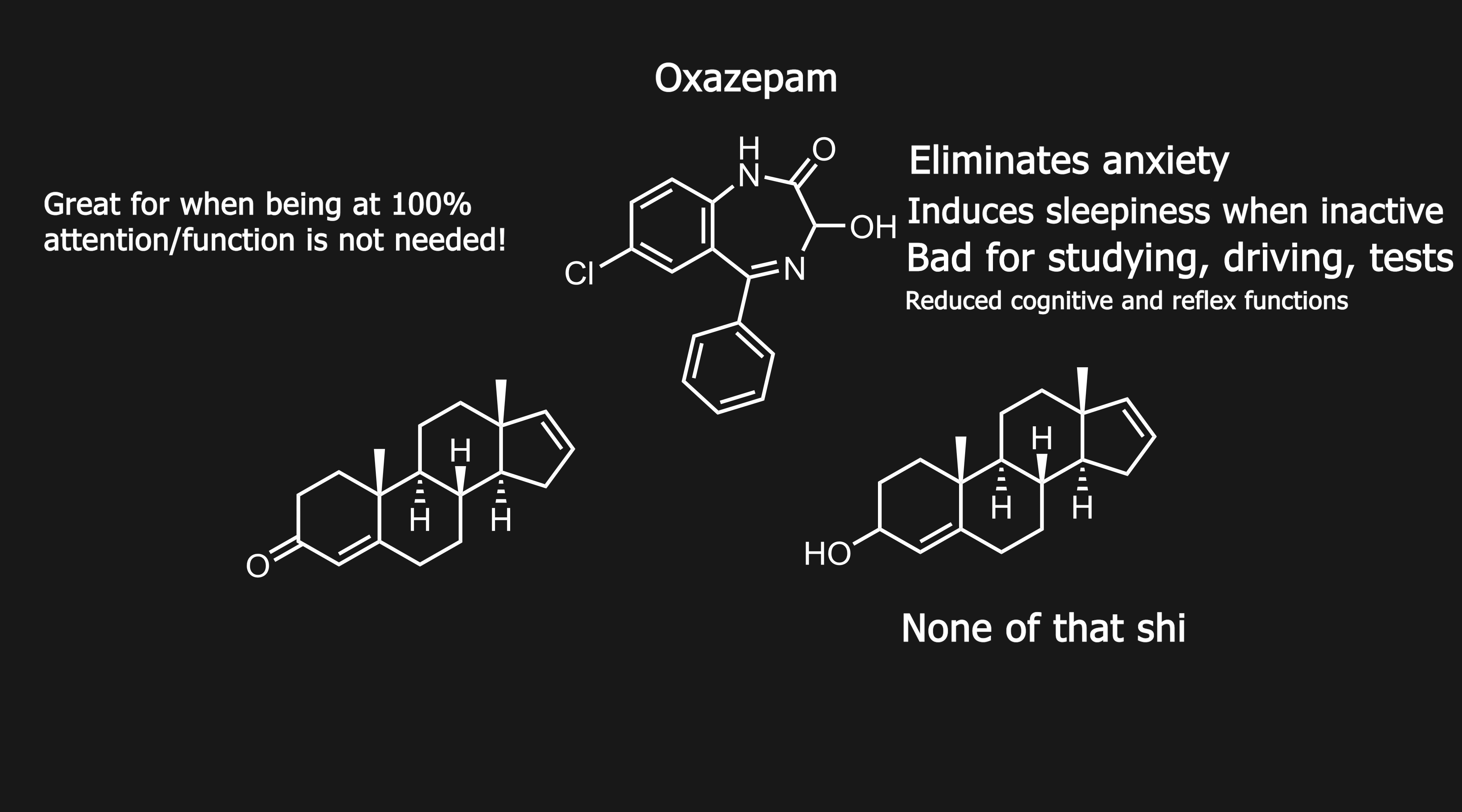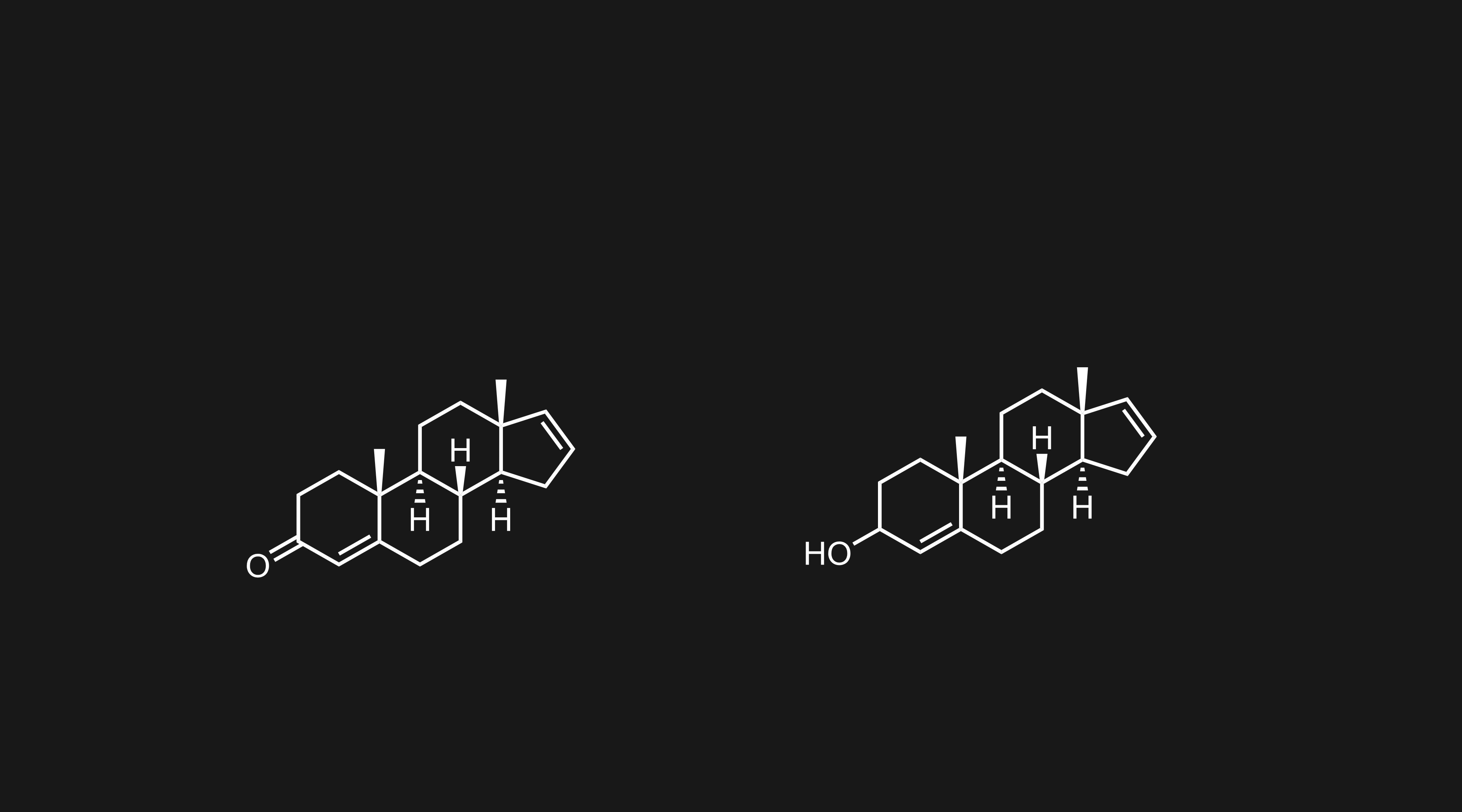To make phasedienol, only requires a reduction of the ketone to an alcohol, while leaving the alkenes untouched. That can easily be done, with the common reducing agent lithium aluminum hydride.